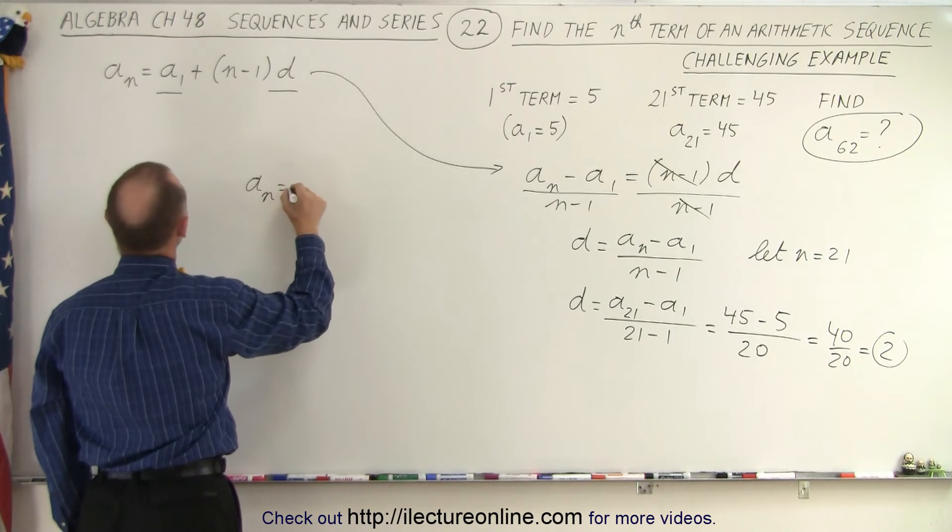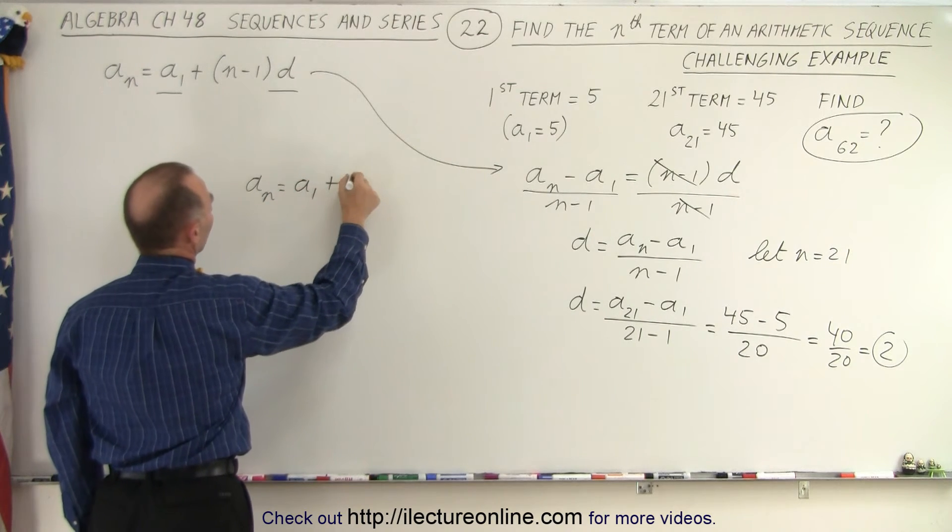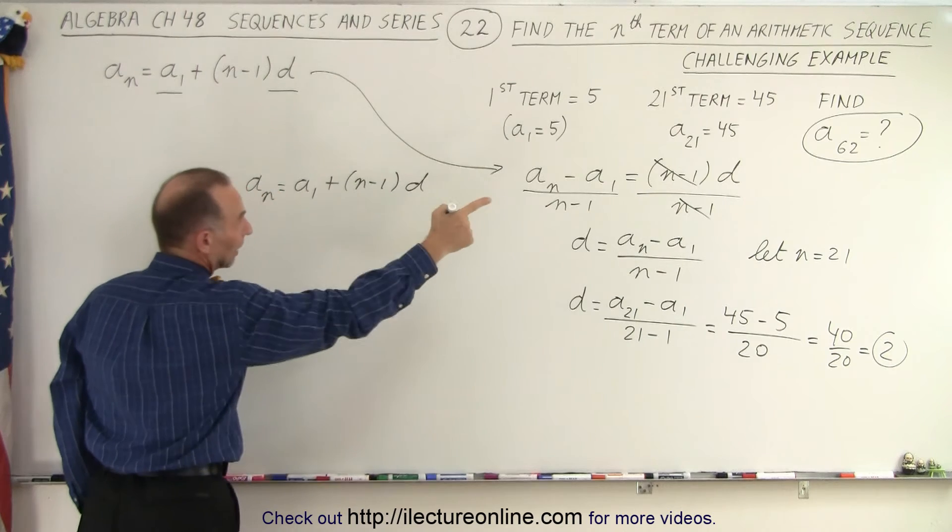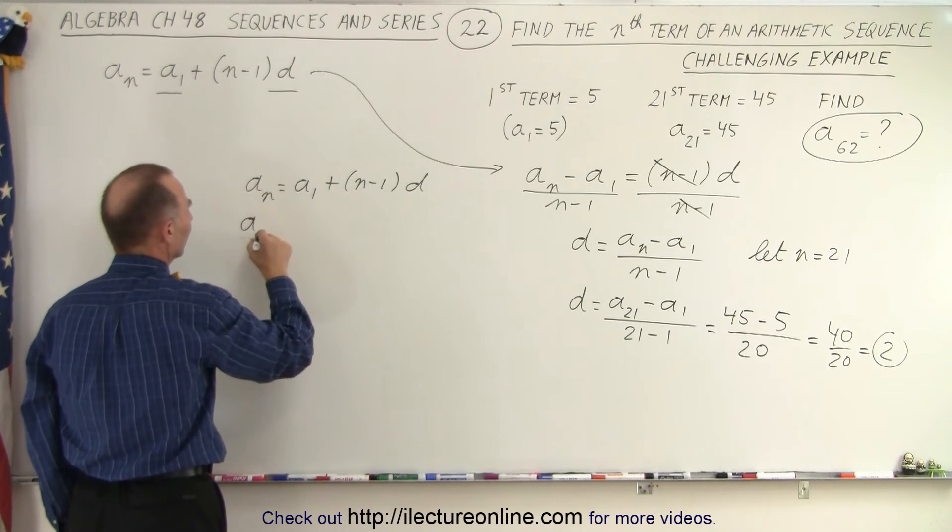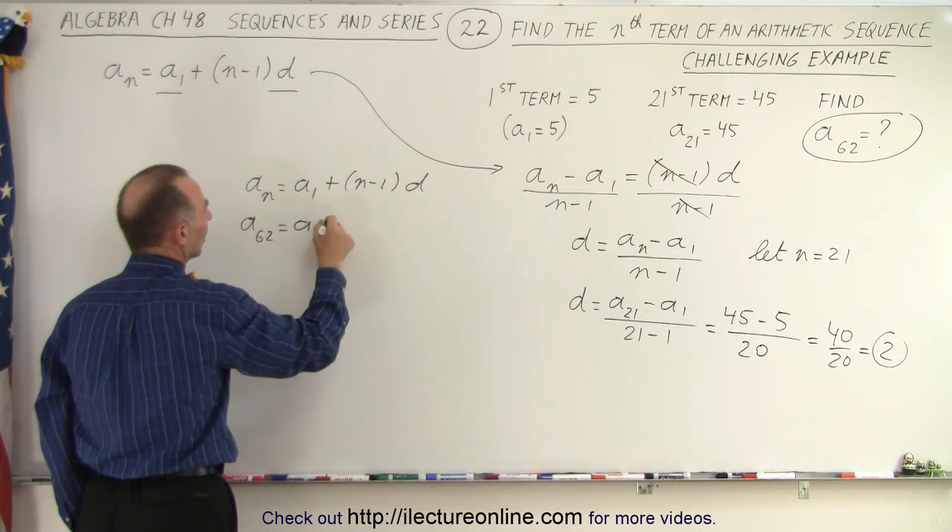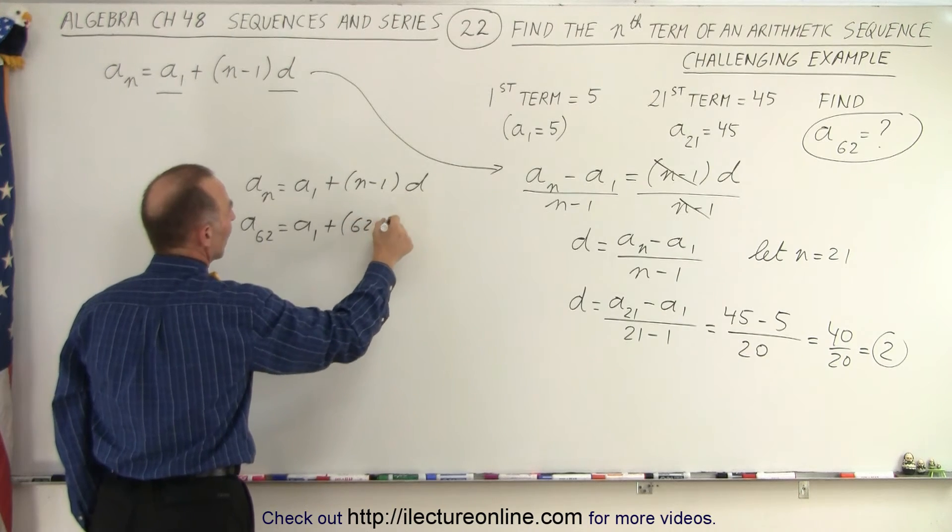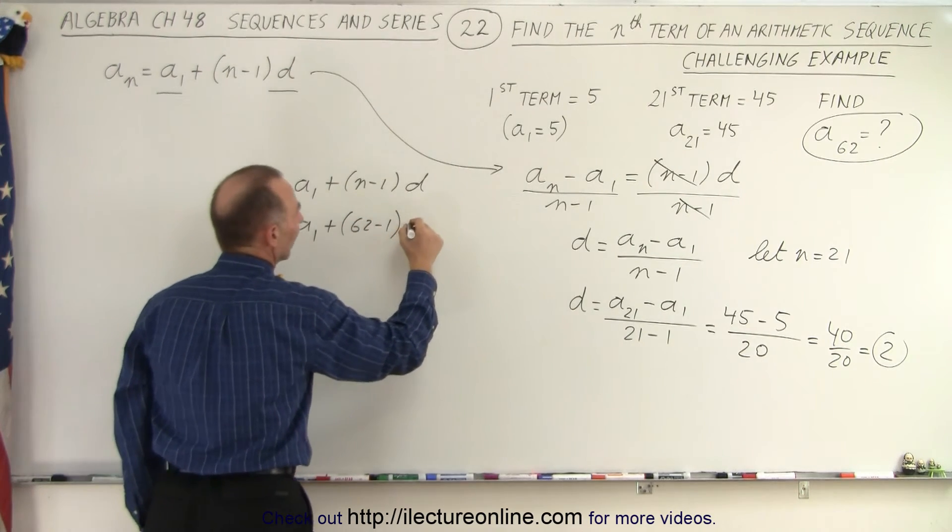We have A sub N is equal to A sub 1 plus N minus 1 times D. And now we're looking for A62, which is A1 plus 62 minus 1 times D, and D is equal to 2.